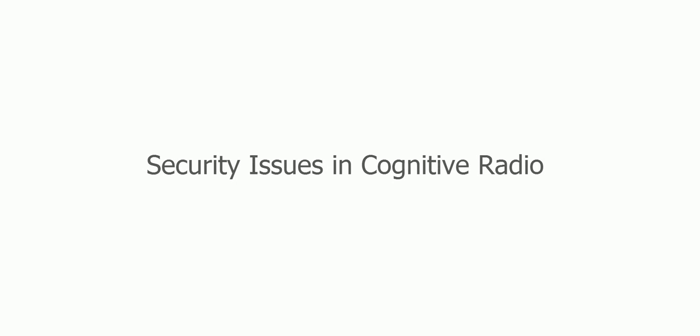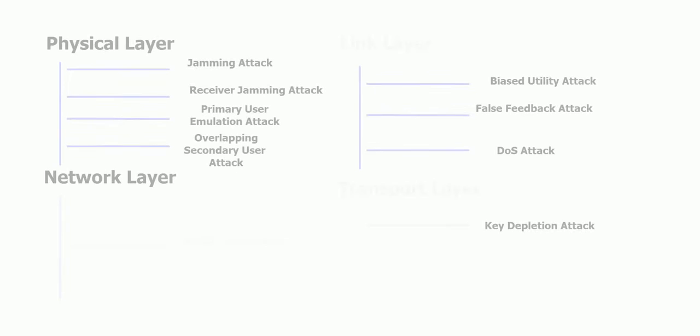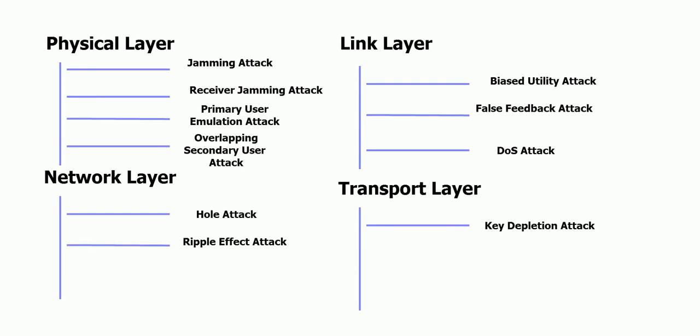Hello and welcome to yet another tutorial of Cognitive Radio. In this tutorial we are going to look into the security issues of cognitive radio and then look inside the primary user emulation attack in detail. Because cognitive radio is a software controlled radio, there are several types of attacks that are inherent to the basic architecture of the system. Now let's look into different types of security issues in cognitive radio pertaining to different layers.